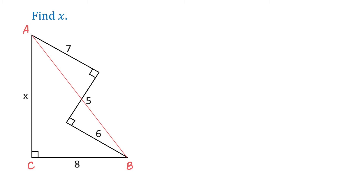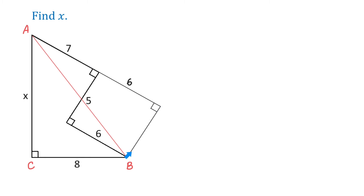To find AB, first we will extend this side, then from point B we will draw a perpendicular to this extension. And now we have a rectangle, where this side is 6 units and this one is 5. Now, if we let this point be point D, then we have another right triangle ABD with AB as the hypotenuse.